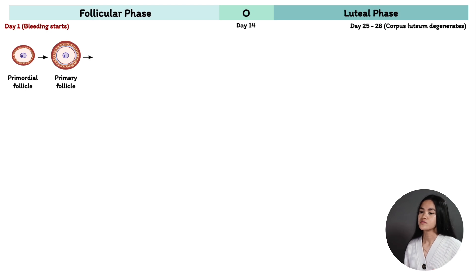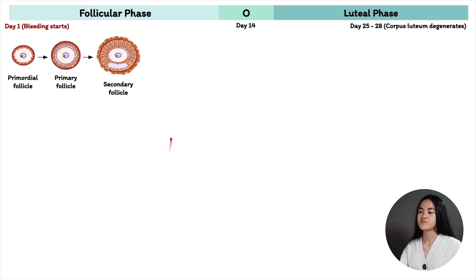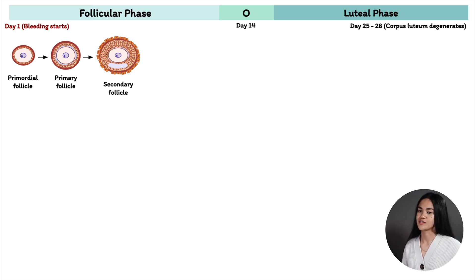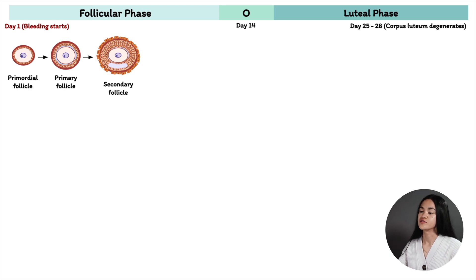From a primary follicle it transitions to a secondary follicle. The granulosa cells keep multiplying and proliferating, forming a thicker layer, and the antrum — a fluid-filled space — also develops. The theca cells work together with the granulosa cells to produce estrogen, because granulosa cells lack the enzymes needed to produce androgen precursors of estrogen. The theca cells synthesize androgens from cholesterol, which then diffuse into the granulosa cells and are converted to estrogen.